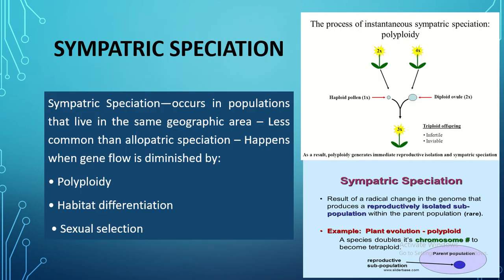Sympatric speciation occurs within populations living in the same geographical area, where chromosomal mutations produce a new species. For example, two flower populations — one with the normal two sets of chromosomes and another with an abnormal four sets (tetraploid) — when they interbreed, the resultant organism has an abnormal number of chromosomal sets. This polyploidy produces a new variety or new species of flower.